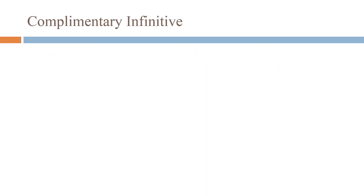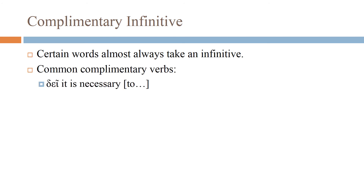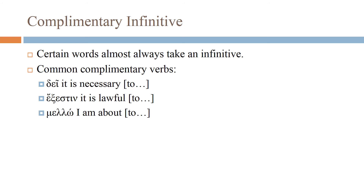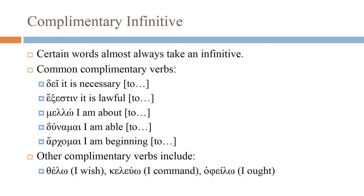The complementary infinitive: certain words in Greek almost always take an infinitive. If you see these verbs, you can almost always expect an infinitive in the sentence. Common complementary verbs are: dei ('it is necessary to'), exestin ('it is lawful to'), mellō ('I am about to do something'), dunamai ('I am able to do something'), archomai ('I am beginning to do something'). Other complementary verbs include thelō, koluō, and opheilō.